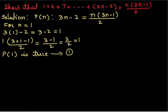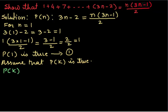This is my first equation. Let us assume that P(k) is true. P(k) is true means instead of n we will replace n by k. So P(k) is 3k minus 2 equals k(3k - 1) over 2.